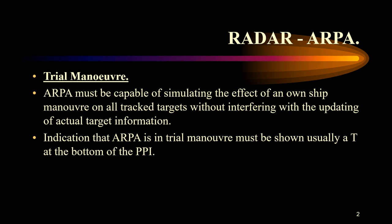Under the performance standards as prescribed by the IMO for ARPA equipment, an ARPA must be capable of simulating the effect of an own ship maneuver on all tracked targets without interfering with the updating of actual target information. There has to be some form of positive identification on the display whilst in trial maneuver — usually a 'T' or the word 'TRIAL' is written on the radar PPI, that is the Plan Position Indicator.